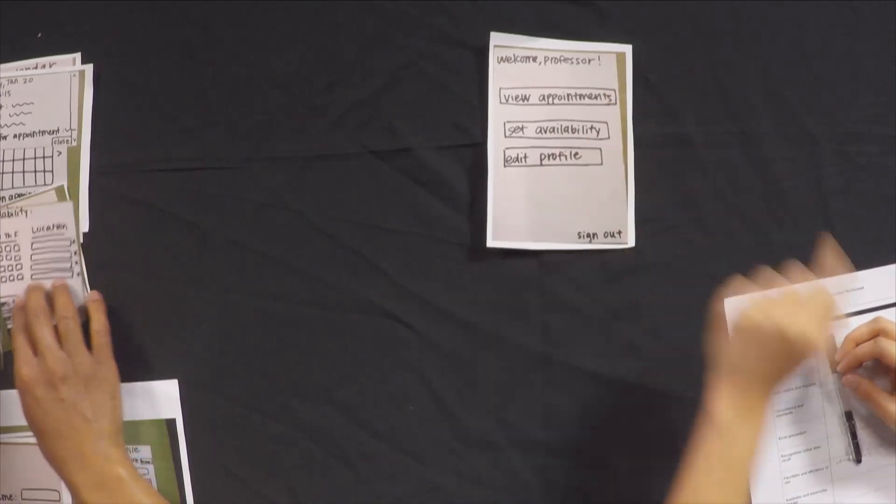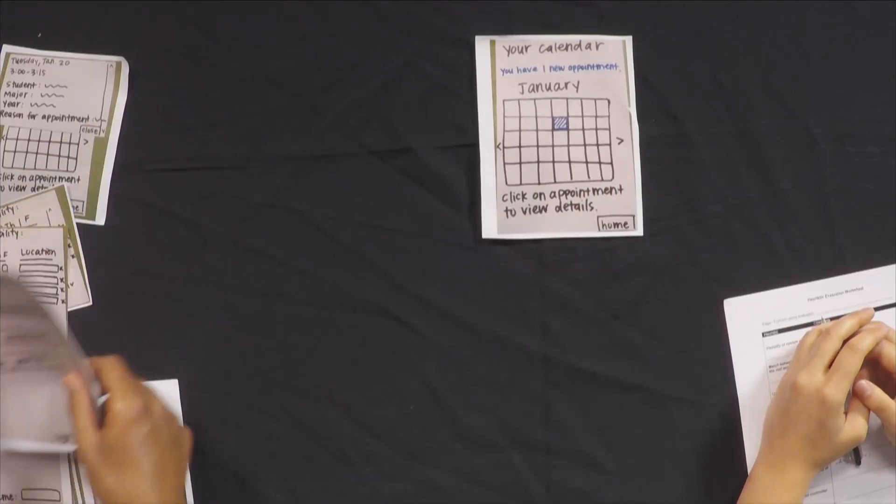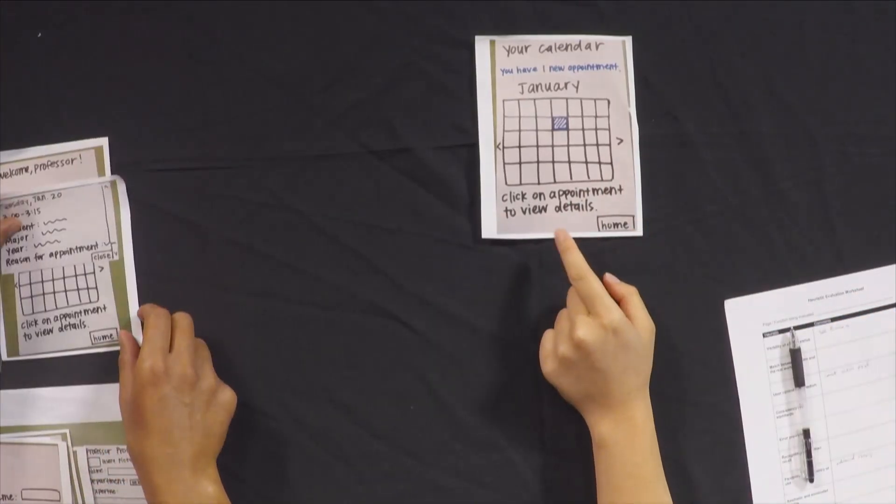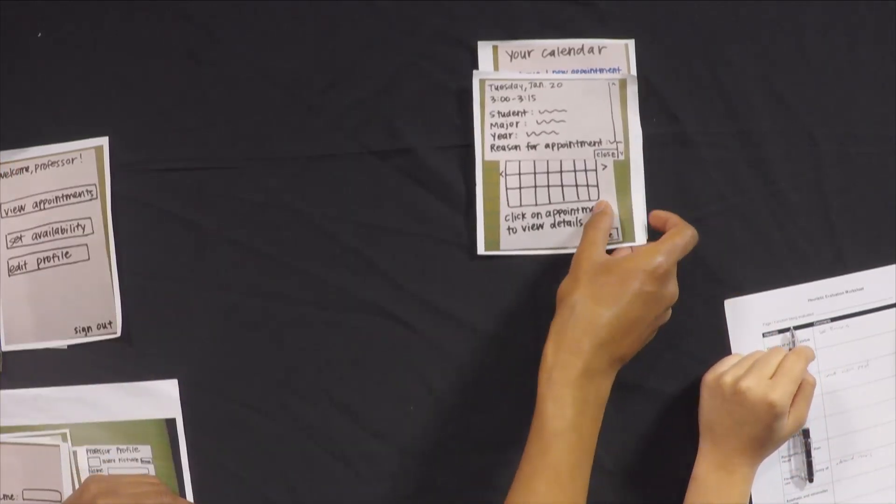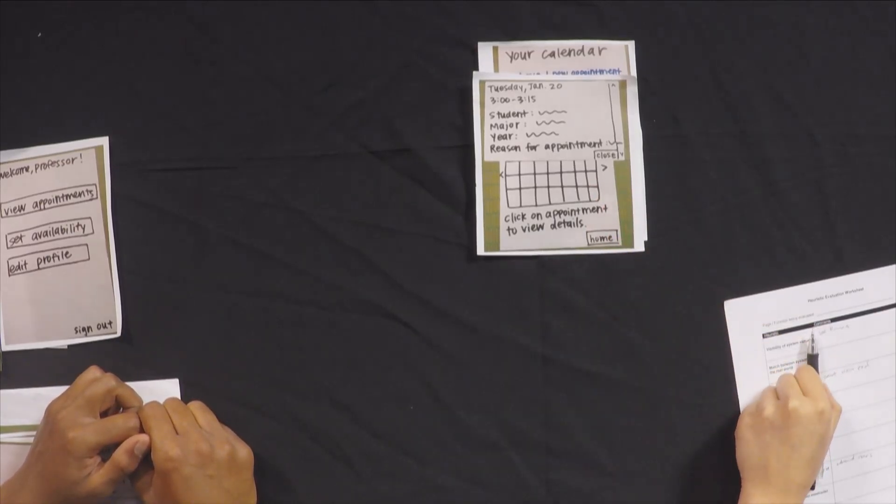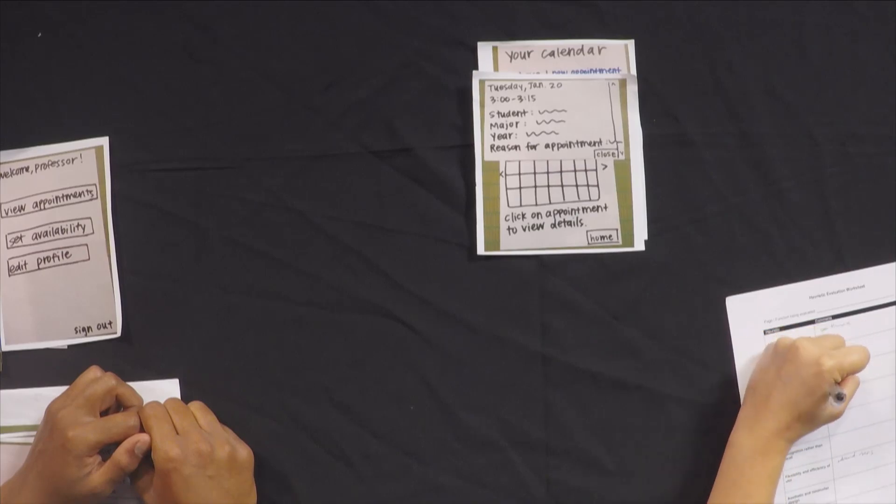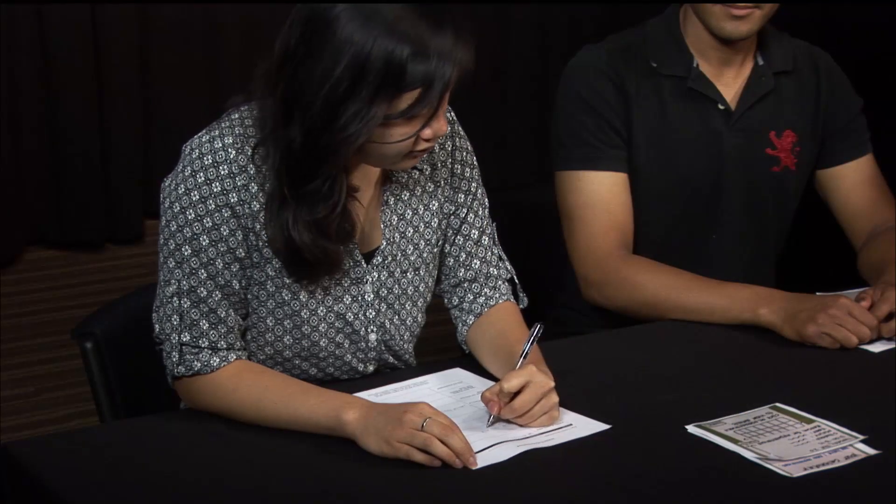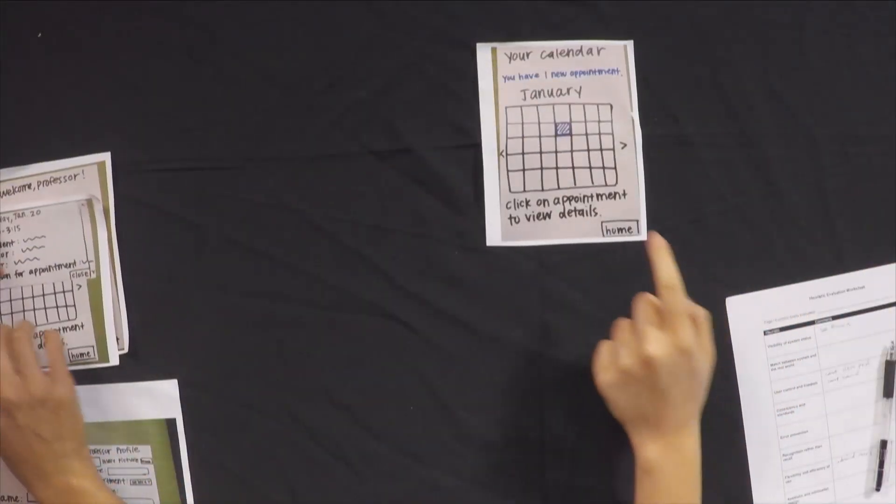So let's view my appointments now. So it says click on appointment to view details. So I'm guessing this is my appointment. Click this. OK, so I have an appointment Tuesday, January 20th with some student. What if I can't make that time anymore? It doesn't look like there's a way for me to cancel it. I'll note that down under user control. Can't cancel. So let's close this and go home again.